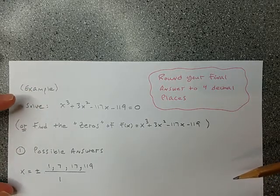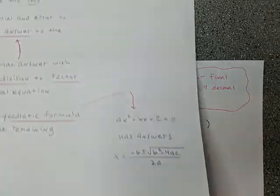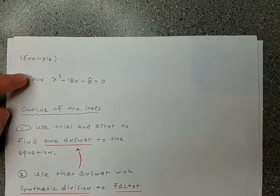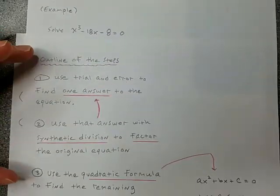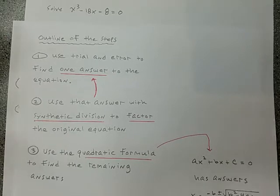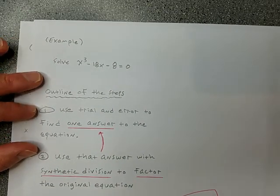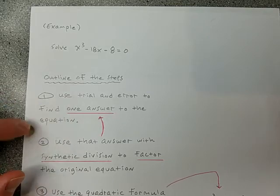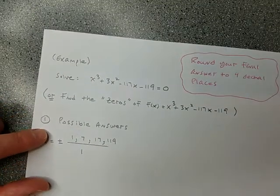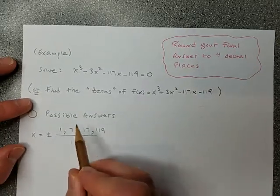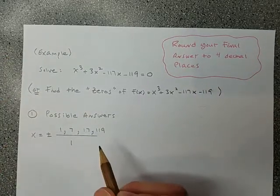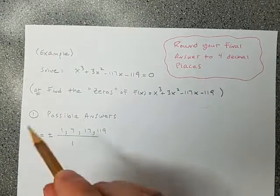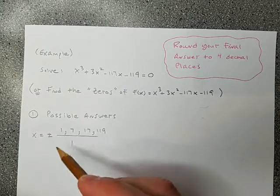If you're going through the videos in the order posted on Blackboard, this problem comes before the one I'm about to show you. When I outlined what we're going to do, the first part in solving something like this is to use trial and error to find one answer to the equation. To use trial and error, it sure would be nice to have things narrowed down, and there's something called the Rational Zeros Theorem that allows us to do that.